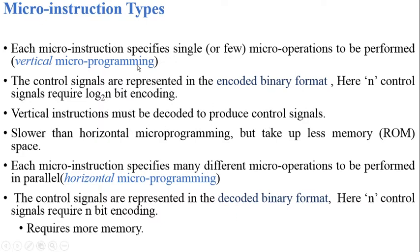What are the properties? For vertical micro instructions, each micro instruction specifies a single or few — that means one or zero micro operations to be performed. Control signals are represented in encoded binary format, meaning the control signals inside the micro instructions are specified in an encoded binary format.